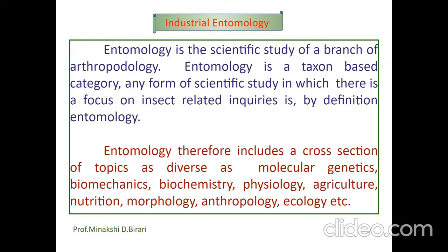In the past, the term insect was more vague and historically the definition of entomology included the study of terrestrial animals in other arthropods or other phyla such as earthworms, land snails and slugs. This wider meaning may still be encountered in informal use. We should remember entomology is the scientific study of a branch of arthropodology — a taxon-based category with a focus on insect-related inquiries.